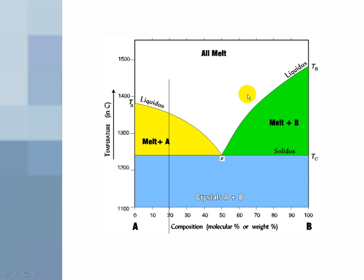Up at the top, in the white region, we have all melt. The line that separates the white from the colored regions is the liquidus. In the yellow region, we have melt plus crystals of A. In the green region, we have melt plus crystals of B. The solidus is the line that separates the yellow and green from the blue. The blue is crystals of A and B. There is no melt there.